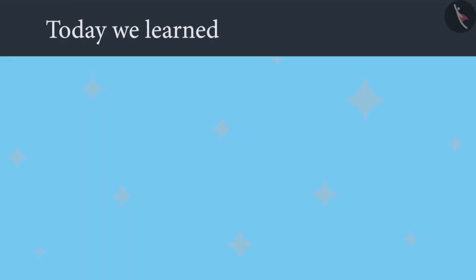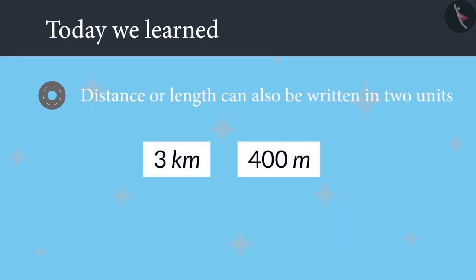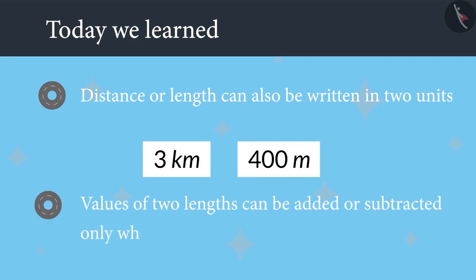Today you learned that distance or length can also be written in two units. Example, 3 kilometers, 400 meters. Values of two lengths can be added or subtracted only when they are written in a single unit.